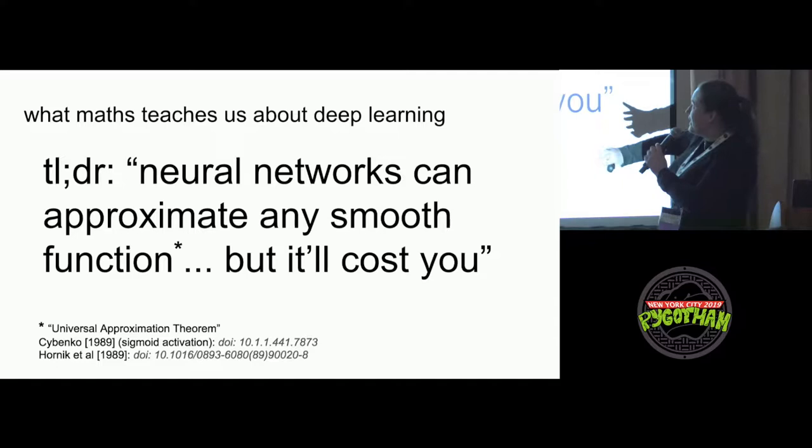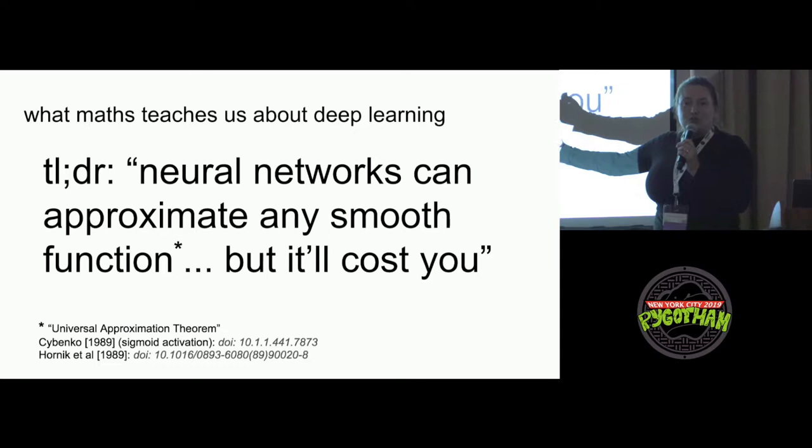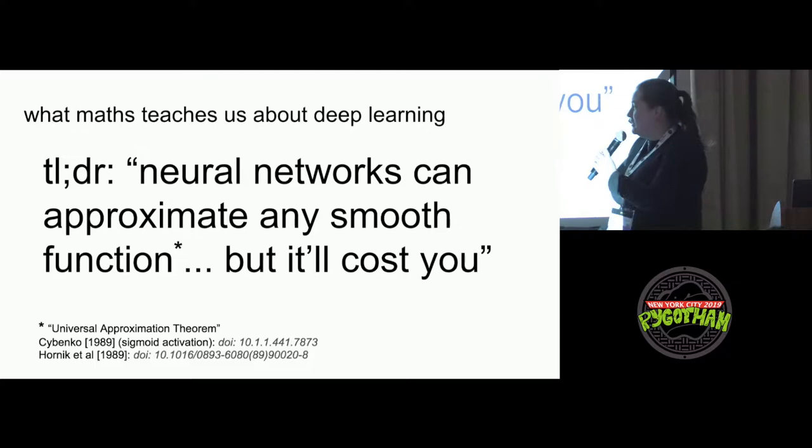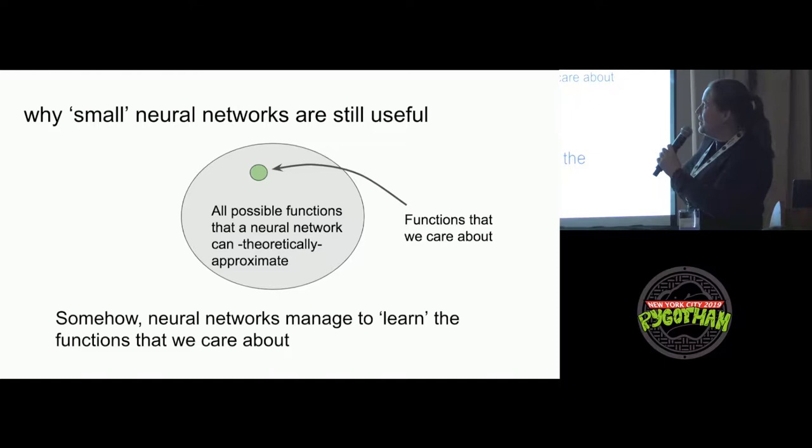Well, I'm just going to skip to the end. They just say that neural networks, they can approximate any smooth function, so most of them in any case. But it doesn't give any guarantees of how many nodes they will have. So they can get very large. And you can read those articles at the bottom. So the question then is, why are they still useful, these neural networks, right?